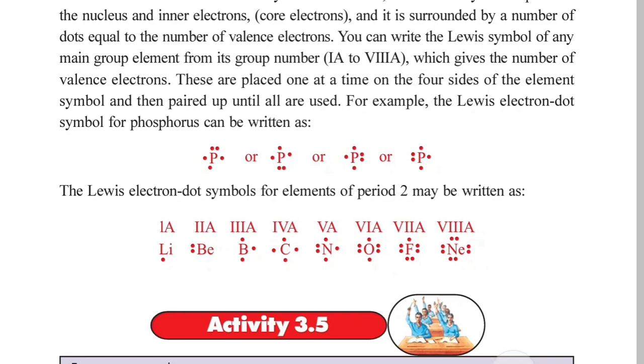Phosphorus has an electron configuration of 2, 8, and 5 — so it has five valence electrons represented in the dot symbol.